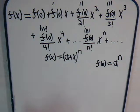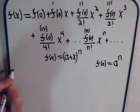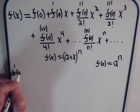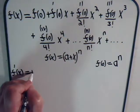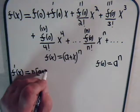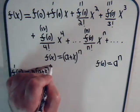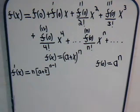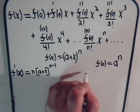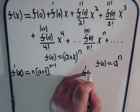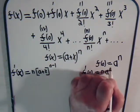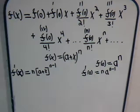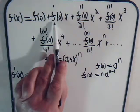We take the first derivative of the function: f prime of x equals n times a plus x to the n minus one power. When x is zero, that becomes n times a to the n minus one. So f prime of zero equals n times a to the n minus one, and that is the coefficient of x.